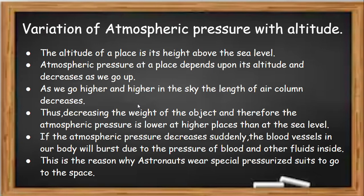Variation of atmospheric pressure with altitude: altitude is the height of a place above sea level. Atmospheric pressure at a place depends upon its altitude — it decreases as we go up. As we go higher, the air column above us decreases, and as the air column decreases, the atmospheric pressure exerted by the air around us also decreases.